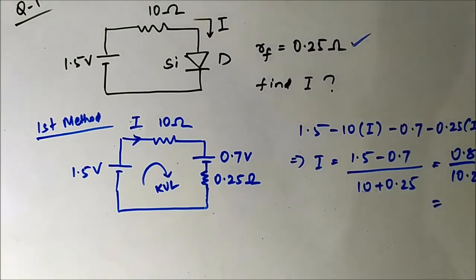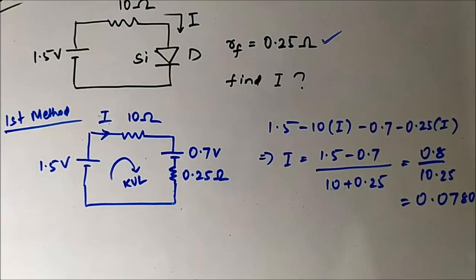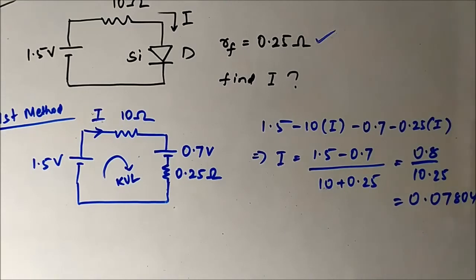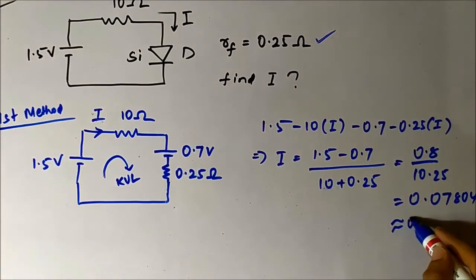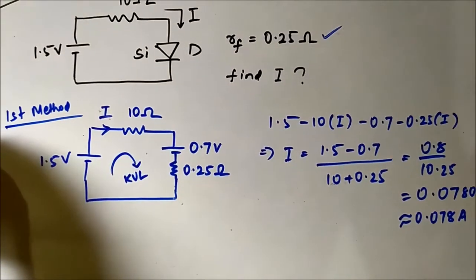Calculating: i equals 0.8 divided by 10.25. Using a calculator, the result comes out to approximately 0.078 ampere.